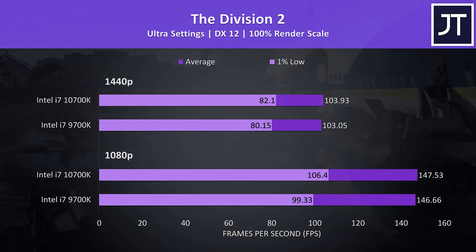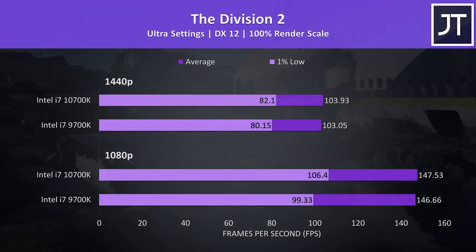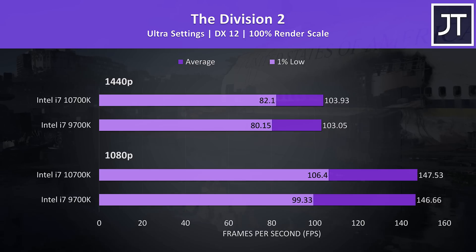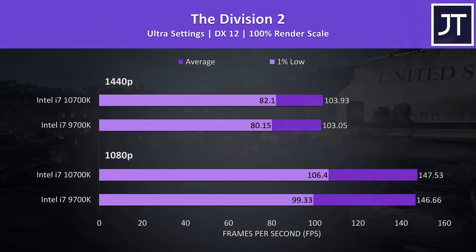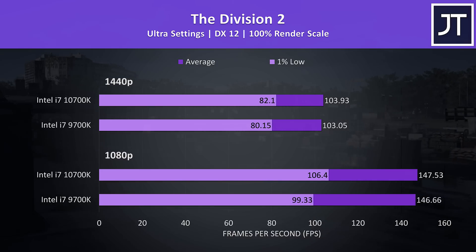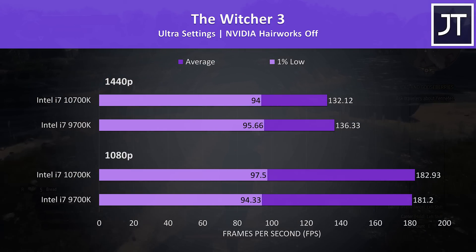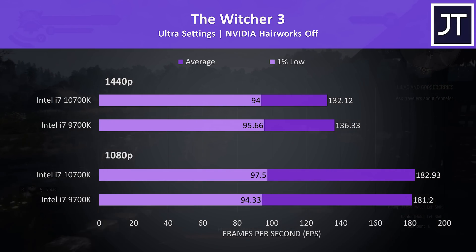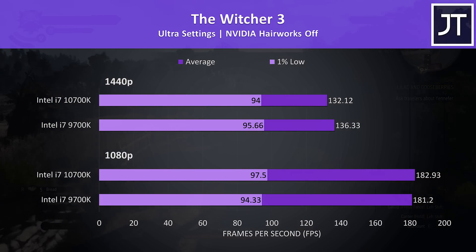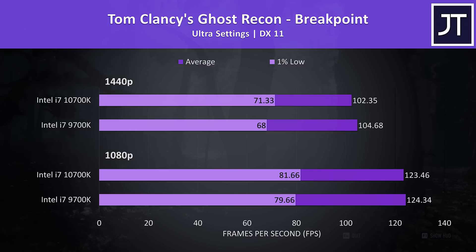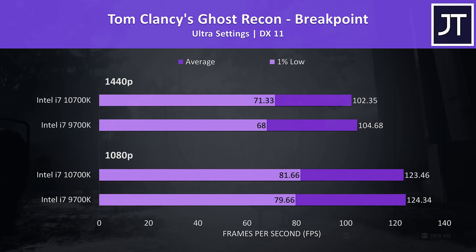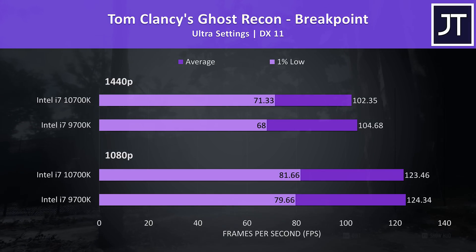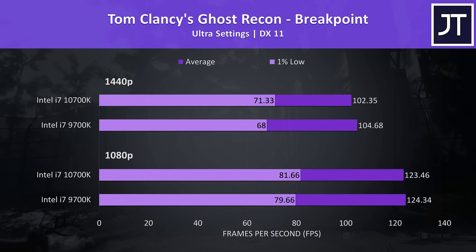The Division 2 was tested using the game's benchmark tool. There seems to be more change in the 1% low performance, which was 7% higher on the 10700K, but when we look at average FPS there's less than a 1% difference — margin of error stuff realistically. The Witcher 3 was another that saw no major differences, though like Shadow of the Tomb Raider the average frame rate was down a little at 1440p. Ghost Recon Breakpoint was tested with the game's built-in benchmark, and although the 1% low was ahead with the 10700K, the average FPS was down a little — but only a small amount, no major differences.